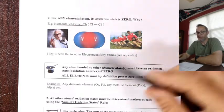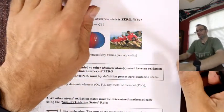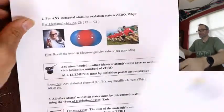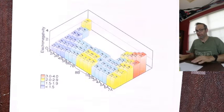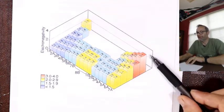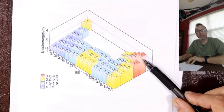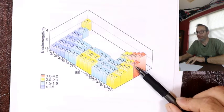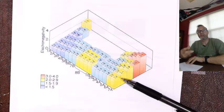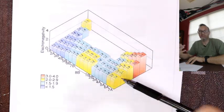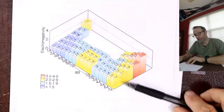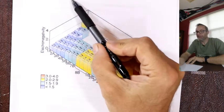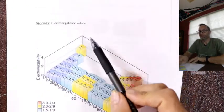Have you ever wondered why things from the top right-hand side of the periodic table make minus ions preferentially — F⁻, O²⁻, Cl⁻ — because they're essentially electron stealers. They grab electrons with great vigor. Electronegativity is a measure of electron-stealing strength.